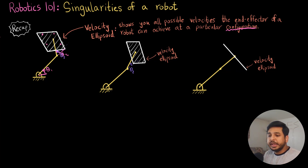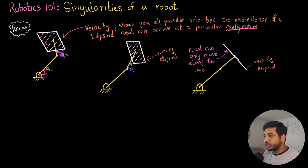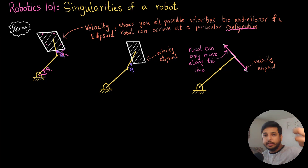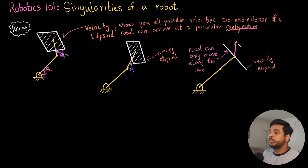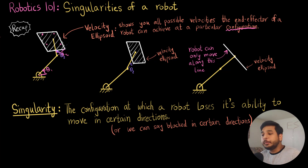The robot can now only move along this line — it can achieve a velocity either parallel to this line, but it cannot achieve a velocity in any other direction. This particular position is known as the singularity of a robot. A singularity means it is the particular configuration at which a robot loses its ability to move in a certain direction.